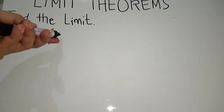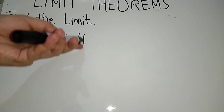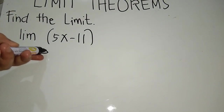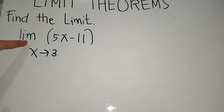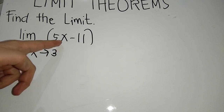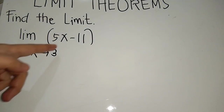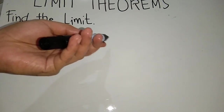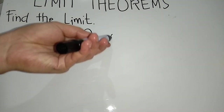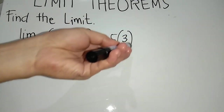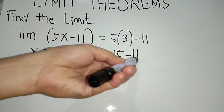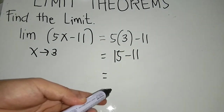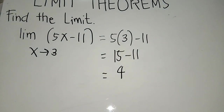For the limit of 5x minus 11 as x approaches 3, we substitute x with 3. This gives us 5 times 3 minus 11, which equals 15 minus 11, which equals 4. So 4 is our limit value.